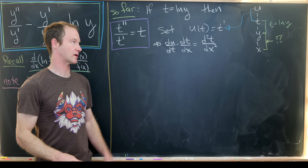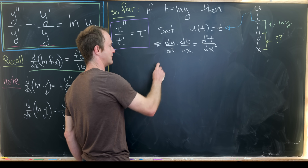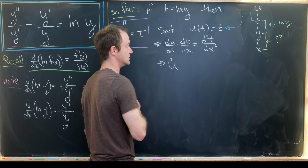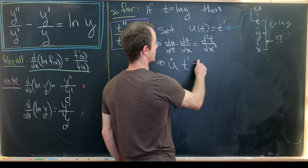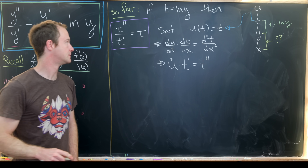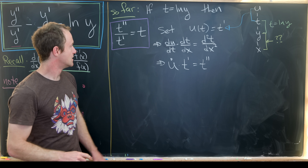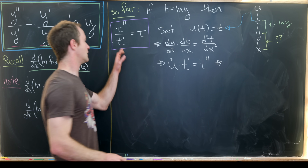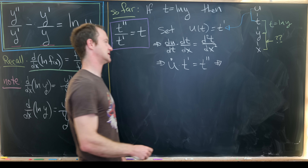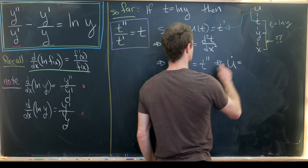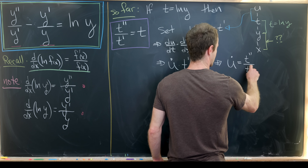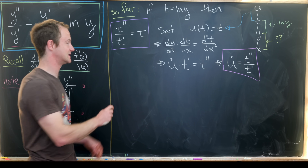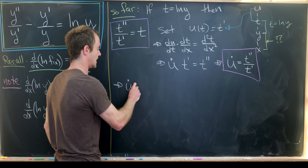Writing this with dot notation for the derivative with respect to t: u̇ · t' = t''. That means we can solve for t'' / t' = u̇. Plugging that into our differential equation gives us u̇ = t, which is a great place to be.